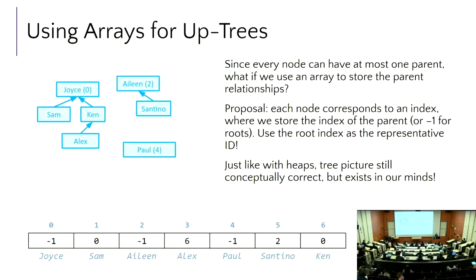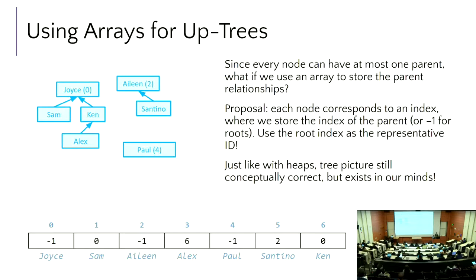If I called find set of Alex: I have a map — give it Alex as the key and it returns the value three, telling me where in the array to jump. I jump to index three, see the number six, remember I've seen six for later path compression, then jump to six which is Ken. I remember Ken, then finally get to Joyce and see a negative number — that's the overall root. Now I know the overall root for Alex is Joyce, and I go back and change those indices to all directly store zero.